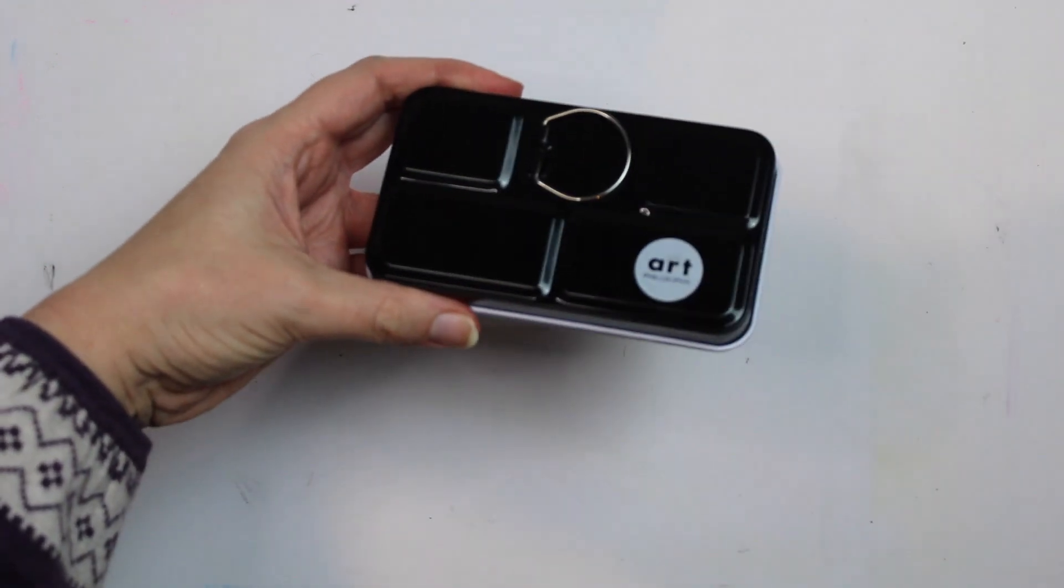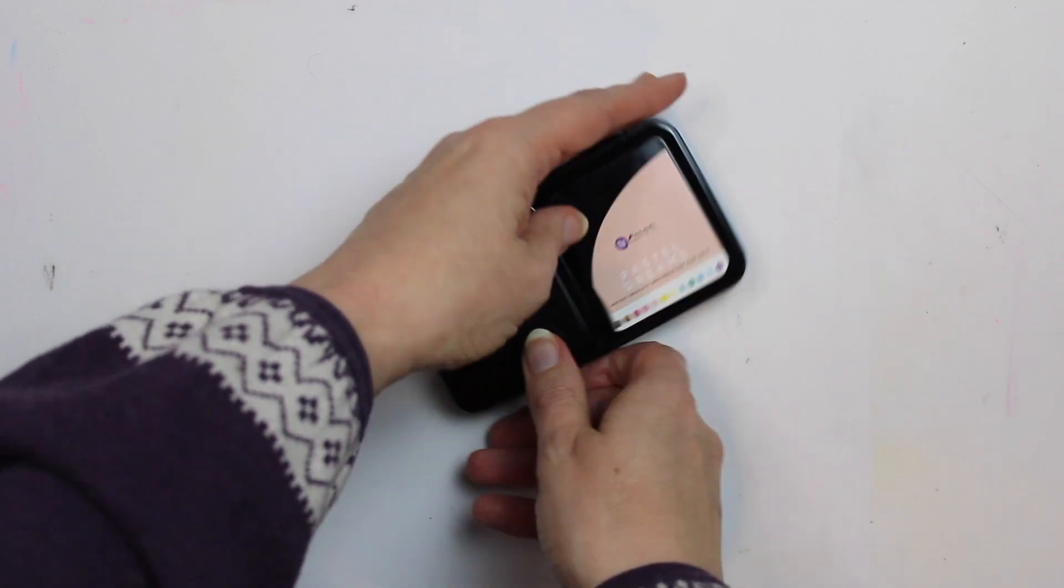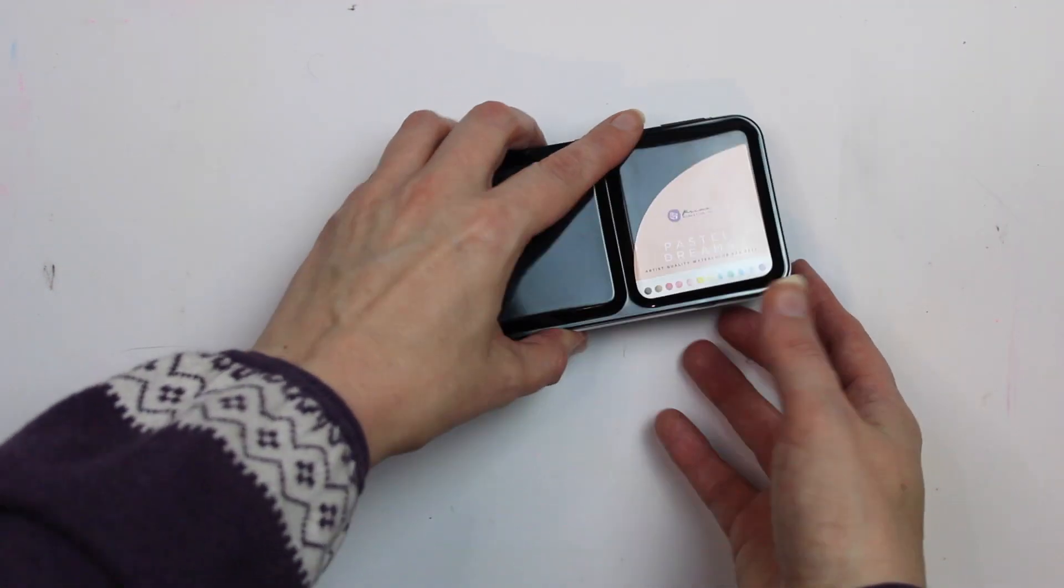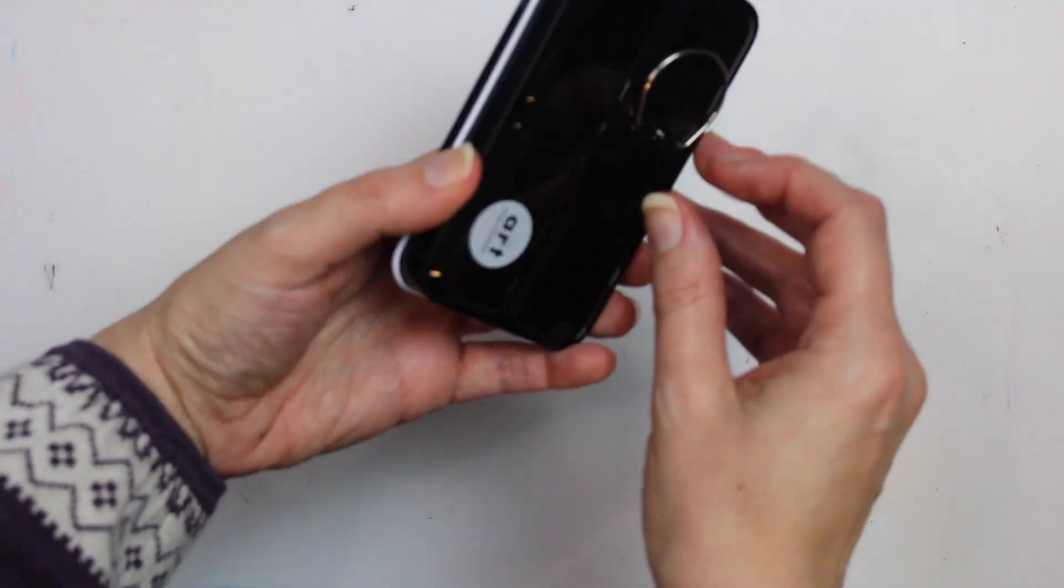As I open the box I can see a really good quality tin. It's got a ring on the bottom and a sticker on the front which shows me the colours. If I decide to buy more in the range I will know exactly which colours I am using.